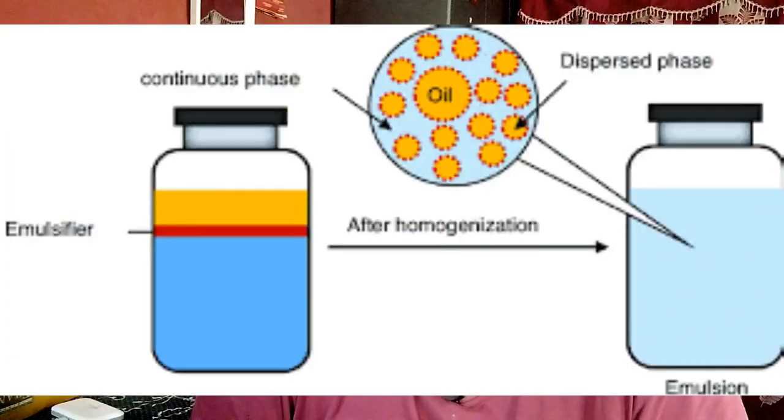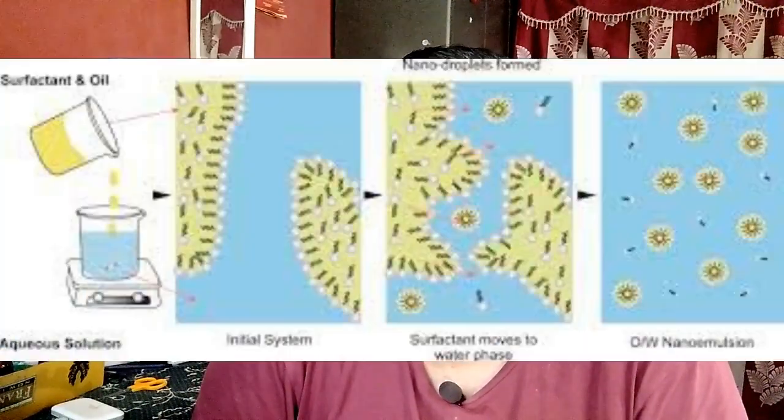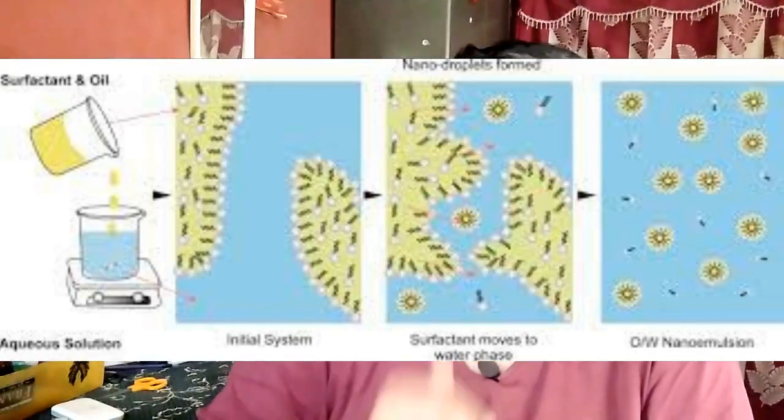We are discussing about adhesives, and in that, we are discussing about emulsification. Emulsification is the process of dispersing two or more immiscible liquids to form a semi-stable mixture. In food applications, these two liquids generally consist of an organic phase and an aqueous phase — that is water phase and oil phase — stabilized by the addition of a food grade emulsifier.